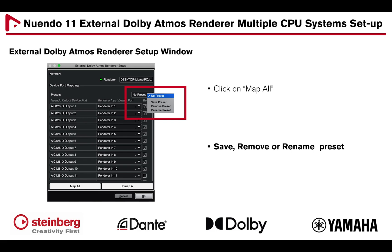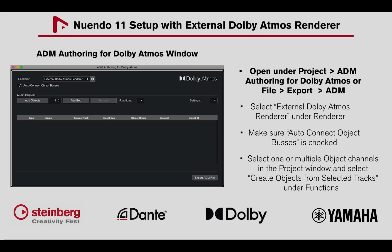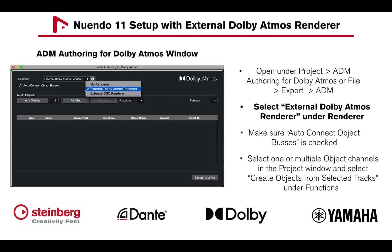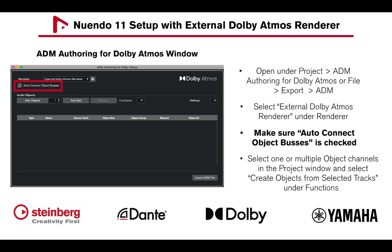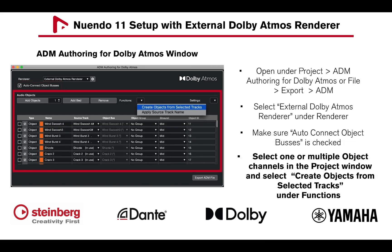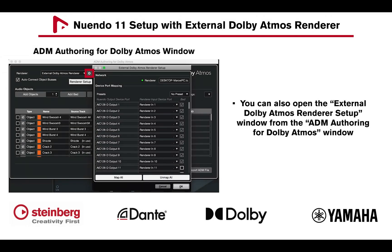A preset can be saved, removed, or renamed. Open the ADM authoring for Dolby Atmos window under Project, or File Export ADM, and select External Dolby Atmos Renderer under Renderer. Make sure Autoconnect Object Busses is checked for automatic connections. You can select one or multiple object channels in the project window and create objects from selected tracks and their functions. The External Dolby Atmos Renderer Setup window can also be opened from the ADM authoring window by clicking on the Renderer Setup icon.